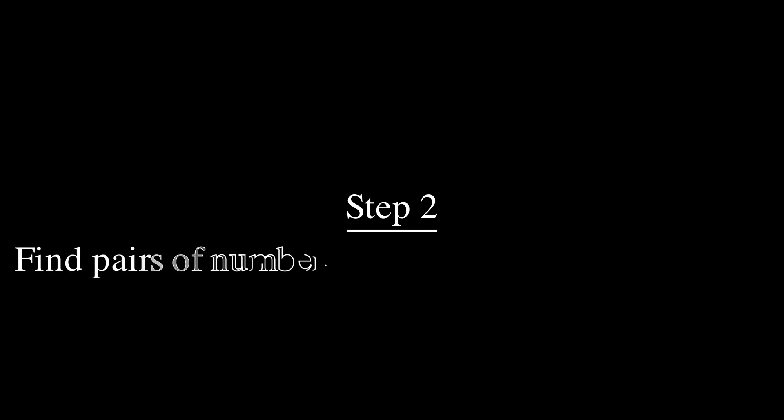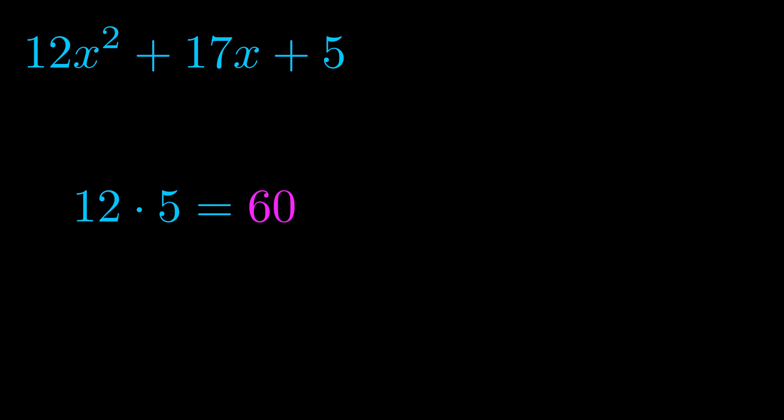Step two is to try to find all of the pairs which multiply to this number. Now it turns out you don't really need to find all of them but go ahead and write down as many numbers as you can that multiply to the magenta value for now. Pause the video and resume when you're ready to continue. Okay here's what I came up with.